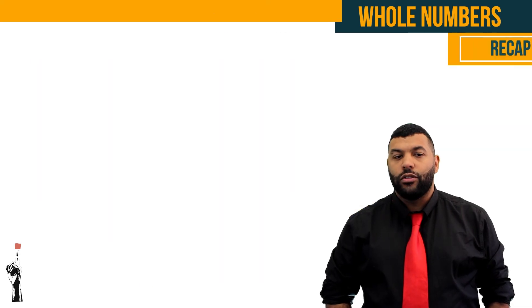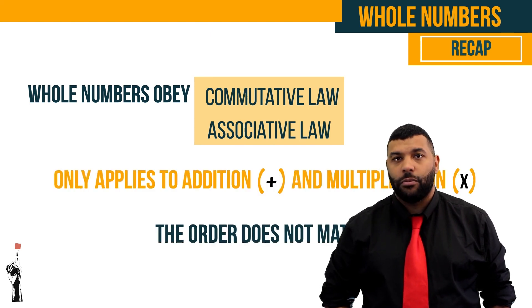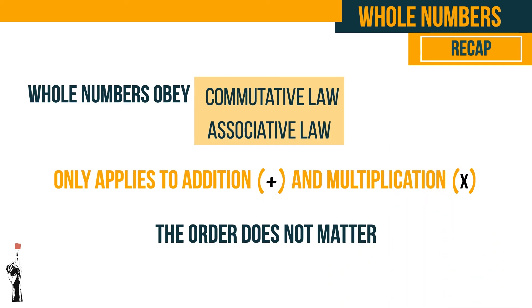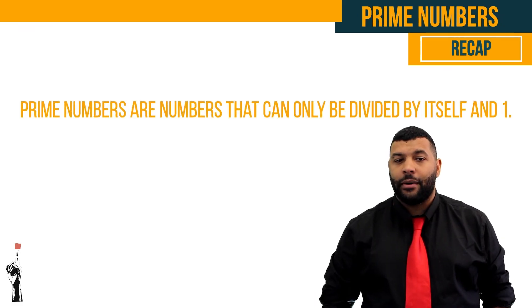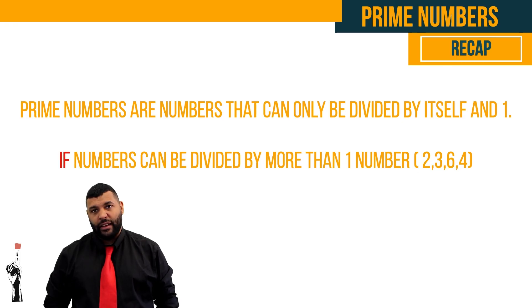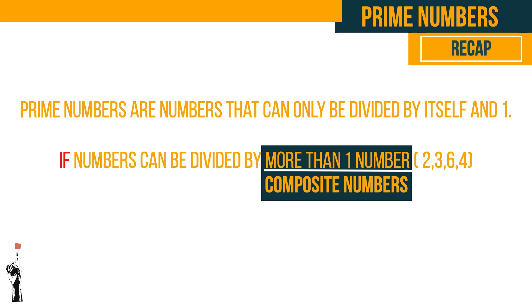To recap and conclude this lesson: whole numbers obey the commutative law and the associative law under addition and multiplication — the order in which we add or multiply does not matter, as long as we only apply one operation at a time. Prime numbers can only be divided by themselves and one without any remainder. If a number can be divided by more than one number — such as two, three, four, or six — those are composite numbers. Thanks for watching and I hope this gives you a great head start into the new year.